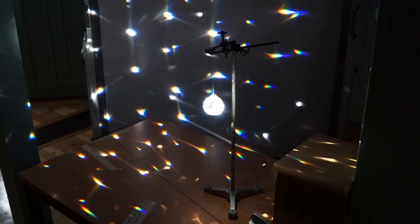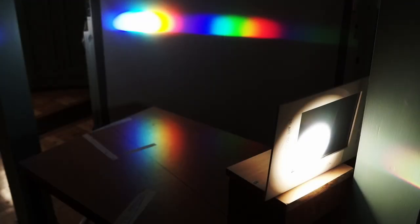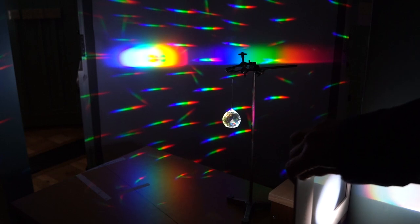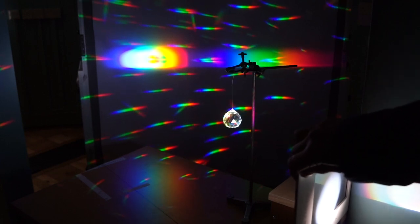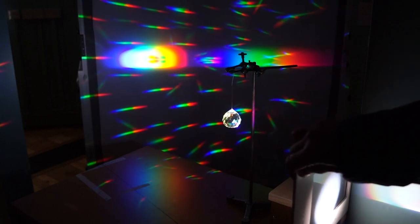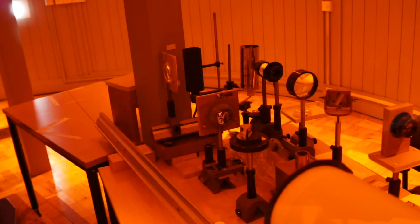We can take the cut glass ball out of the beam and replace it with a sheet of plastic called a diffraction grating, which splits light up into its component colors. And then we can put the glass ball back and enjoy the dance of spectra.